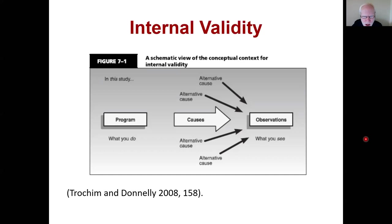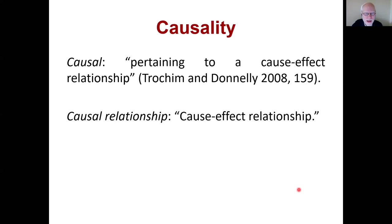Here's a schematic view of the conceptual context for internal validity. In the study, we introduce some program or treatment that we think causes the observation, and we want to find out: is it the cause we actually put in that caused the effect, or is it something else — some alternative cause — that produced what we saw? Causality pertains to a cause-effect relationship: something caused something else.